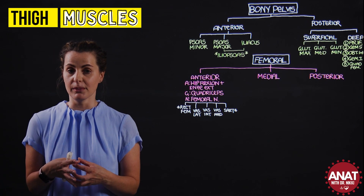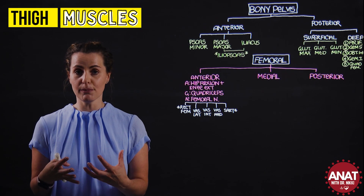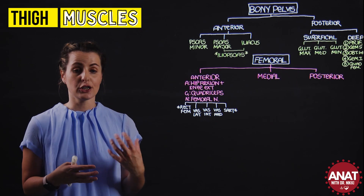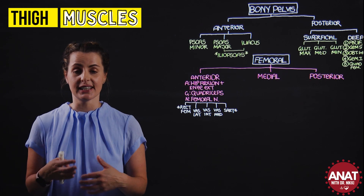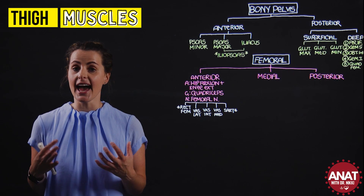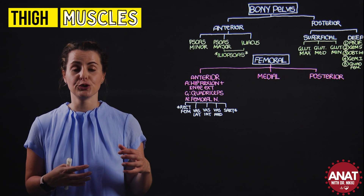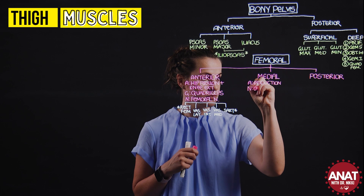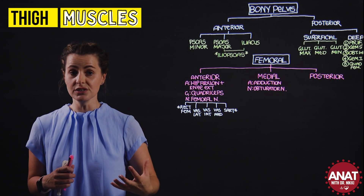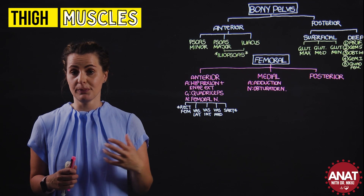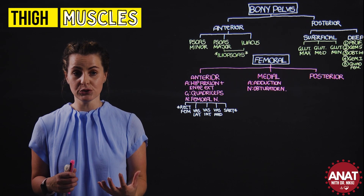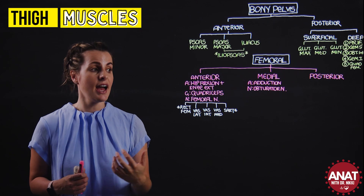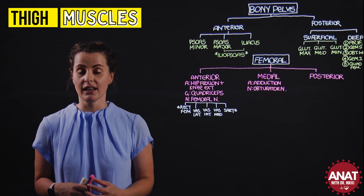The medial compartment muscles are collectively responsible for adduction of the hip or thigh. This includes our major adductors: adductor magnus, adductor longus, and adductor brevis. The common peripheral nerve providing motor supply to these muscles is the obturator nerve. The individual muscles in this compartment also include the gracilis — a small, long muscle running most medially through the thigh — and the pectineus muscle.